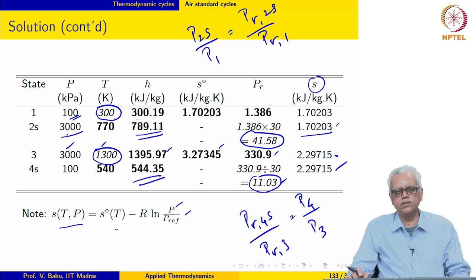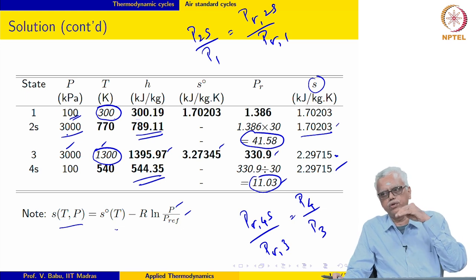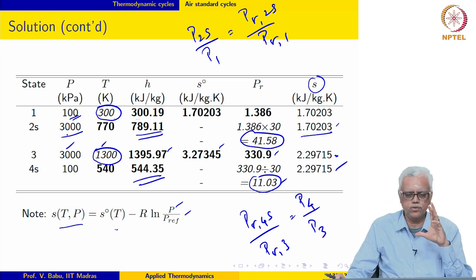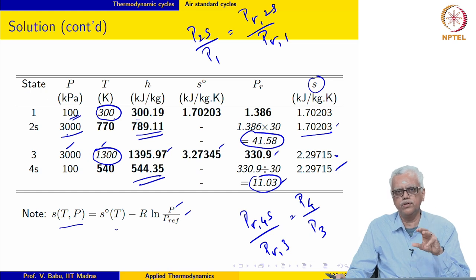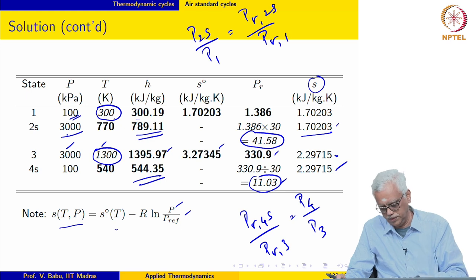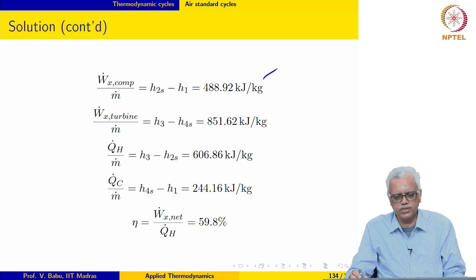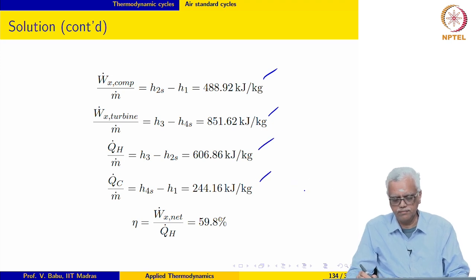Now we have all the properties we want for completing the calculations. At each state, identify the value to be used to enter the table, retrieve the required values, then proceed to the next state — that is the procedure. My suggestion is to pause the lecture at this point, work out the problem yourself, and then come back and compare. Applying the steady flow energy equation to the compressor and the turbine on a per unit mass flow rate basis, the rate of heat addition, heat rejection, and first law efficiency comes out to be 59.8 percent for the basic cycle.